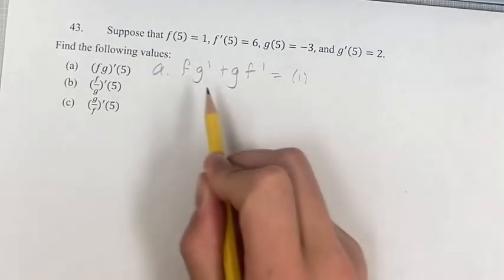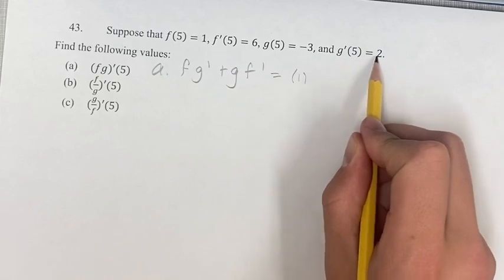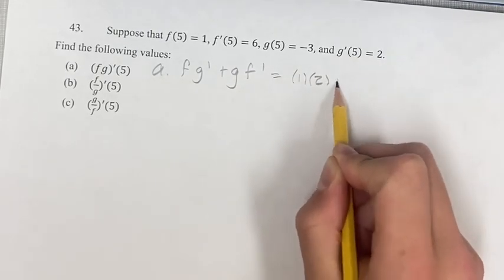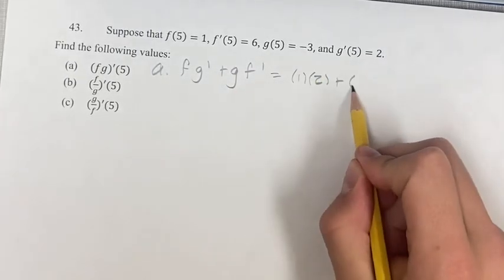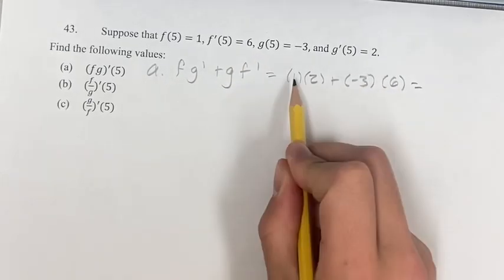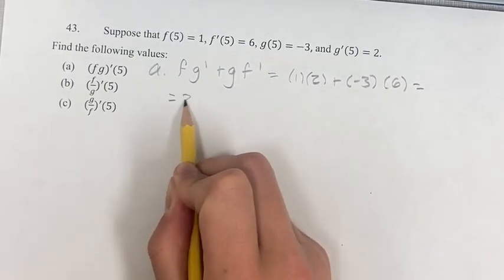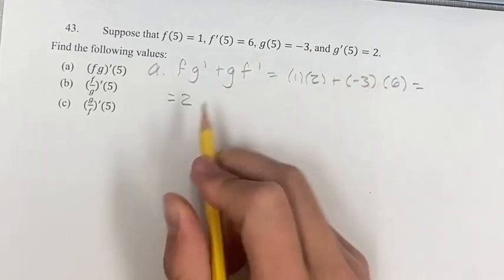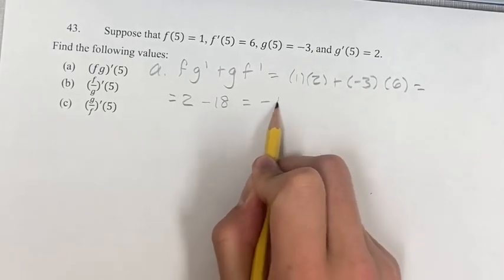So f is 1, g prime, the derivative of g is 2, plus g is negative 3, f prime is 6. 1 times 2 is 2, plus negative 3 times 6 is minus 18, 2 minus 18 is negative 16.